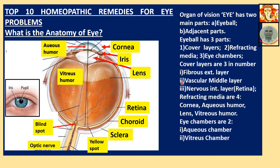The second is the vascular middle layer. This brown portion is the vascular middle layer. On the front side, it is converted into the iris. The central part of the iris is a hole called the pupil.